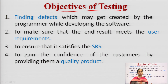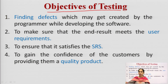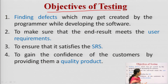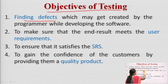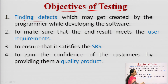To make it global, we should be very clear with the objectives of testing. It should not be the case that one team tests for the entire set of inputs one way and another team does it differently. They should be globally defined. The first and foremost objective is finding the defects that may be created by the programmer when the software is being developed.